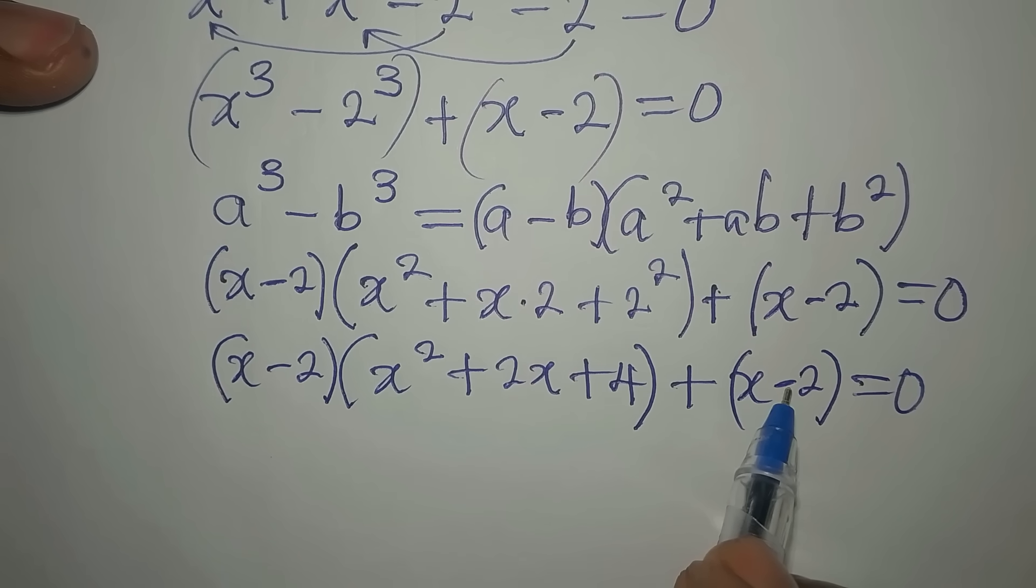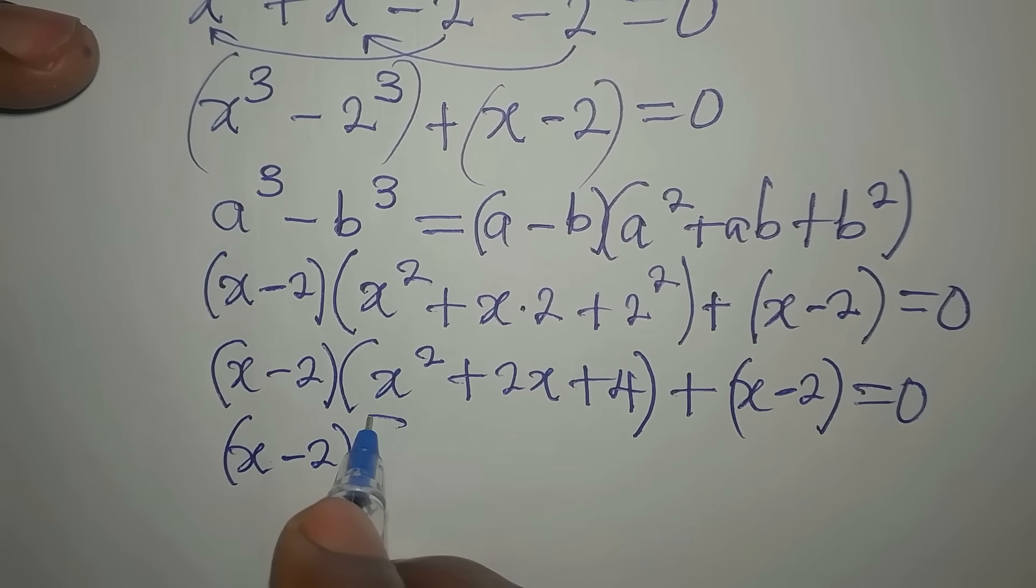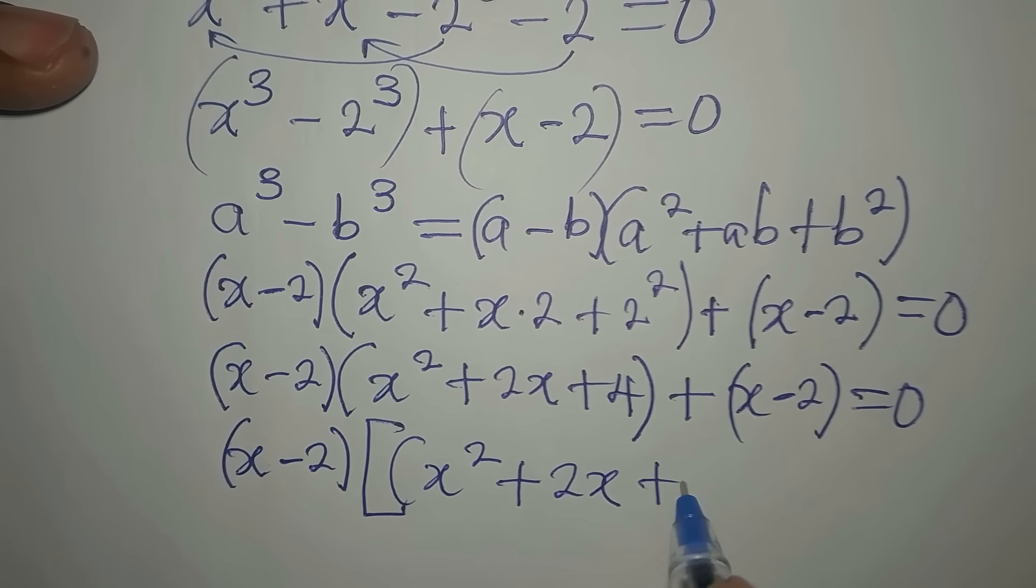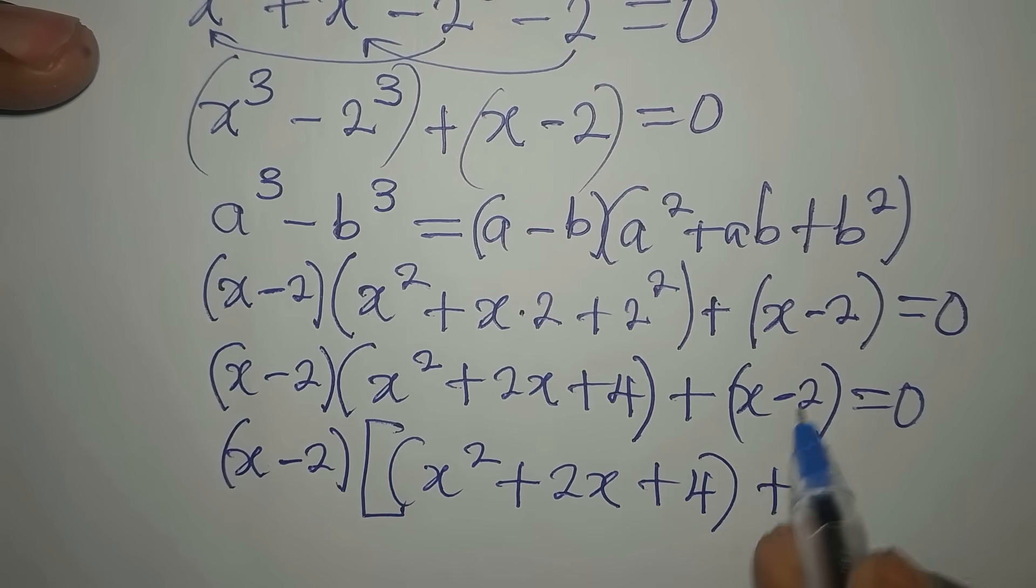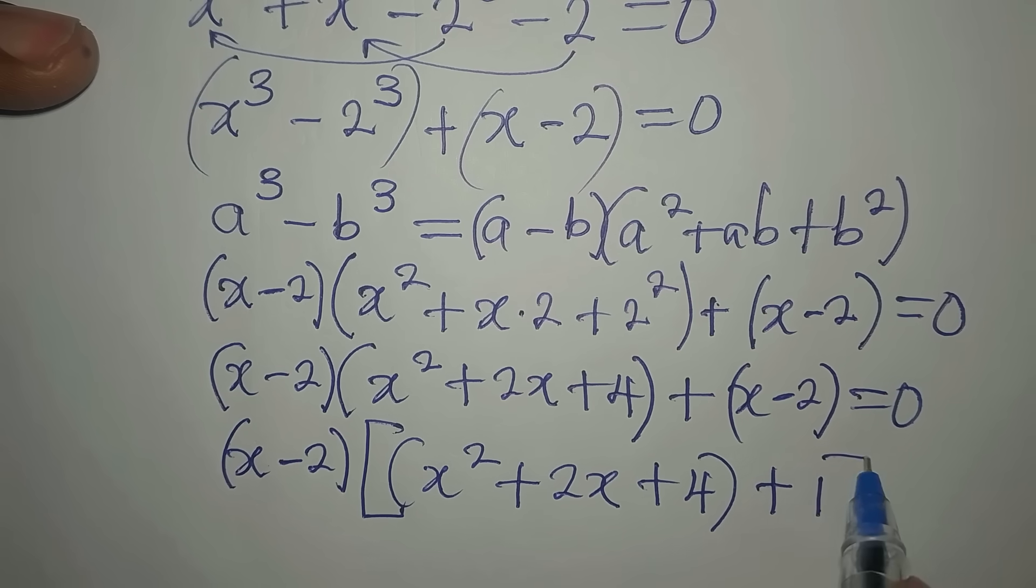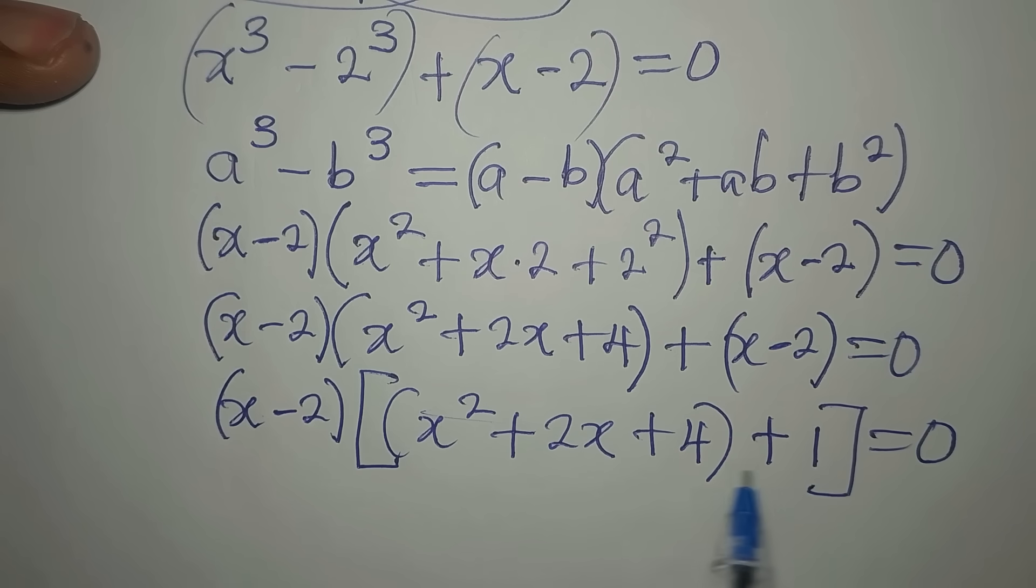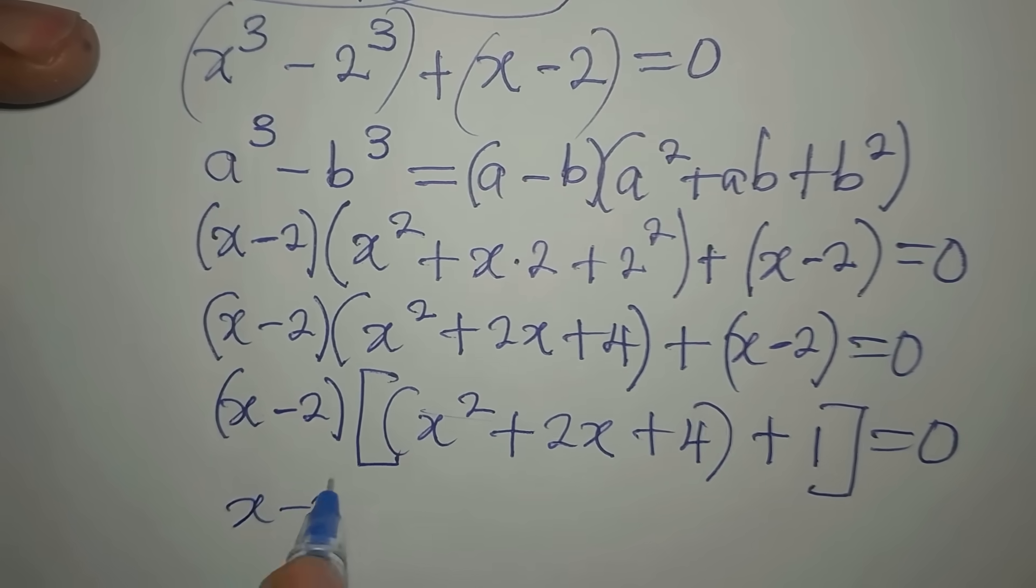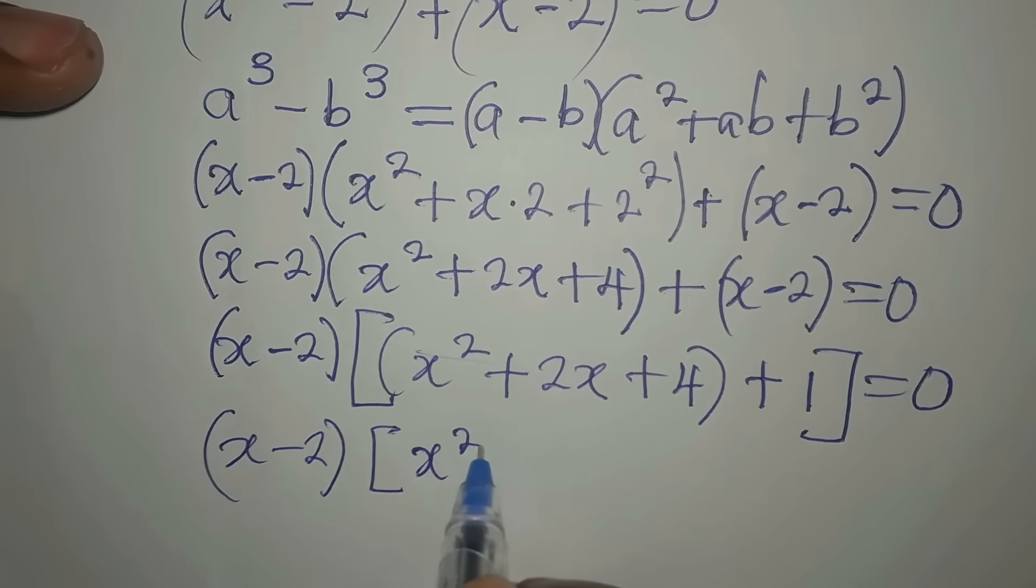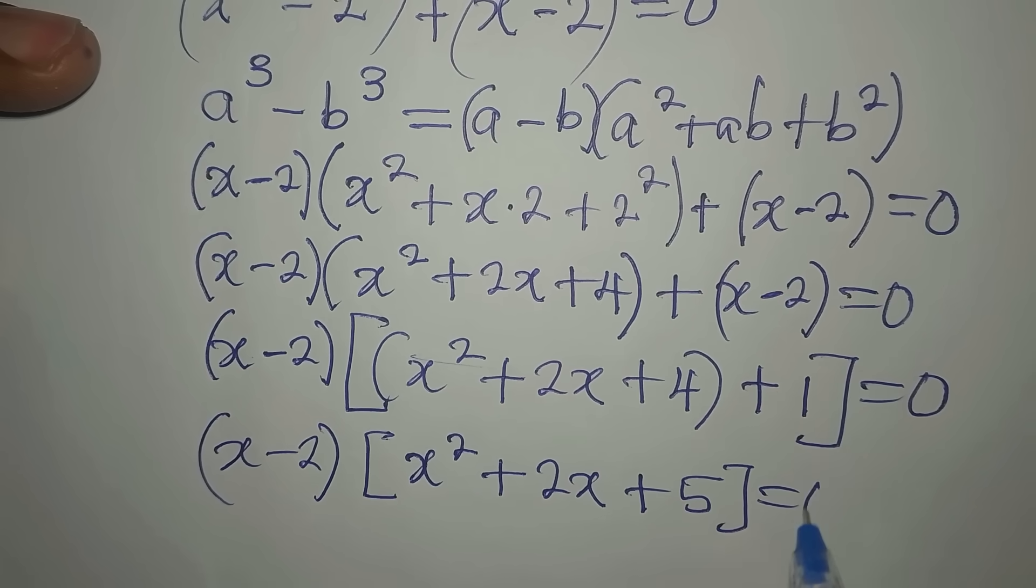These and these are common factors. So x minus 2, I'll pick it out. Then here I have x squared plus 2x plus 4, then plus this divided by this will give us 1. Then we equate to 0. Let's open this one here and add 1 and 4. So x minus 2, our common factor, then here we have x squared plus 2x plus 5 equals 0.